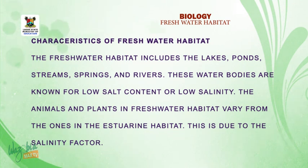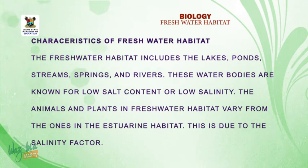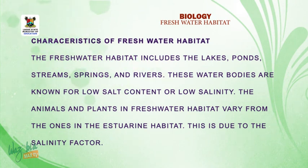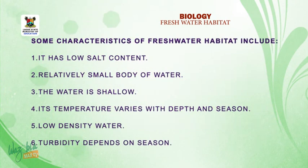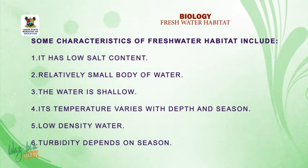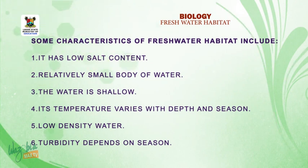The animals and plants in freshwater habitat vary from the ones in other habitats. This is due to the salinity factor — that is, the amount of salt present in the body of water. One characteristic of freshwater habitat is that it has low salt content; the amount of salt present is very, very little.